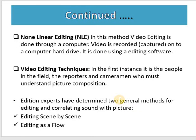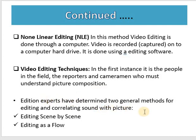The second type is non-linear editing, or NLE. It is the method where video editing is done through a computer. Video is recorded and computed on computer hardware using editing software. The third aspect covers video editing techniques. In the first instance, it is the reporter and cameraman in the field who must understand picture composition. Editing experts have determined two general methods for editing and correlating sound with picture: first, editing scene by scene, and second, editing as a flow.